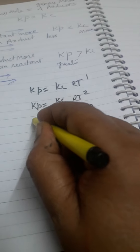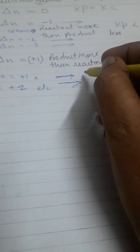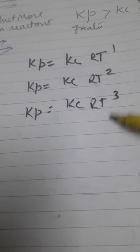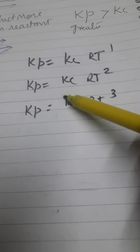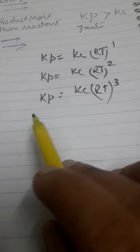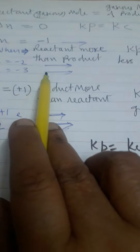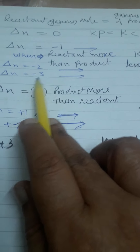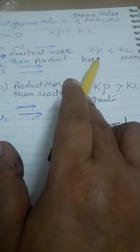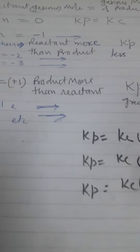When ΔN is positive — +1, +2, or +3 — the value of Kp keeps increasing: Kp = Kc·RT, then Kc·RT², then Kc·RT³. So Kp will be much higher than Kc in these cases. Conversely, when ΔN is -1, -2, or -3, as the negative magnitude increases, Kp decreases and Kc becomes higher and higher.